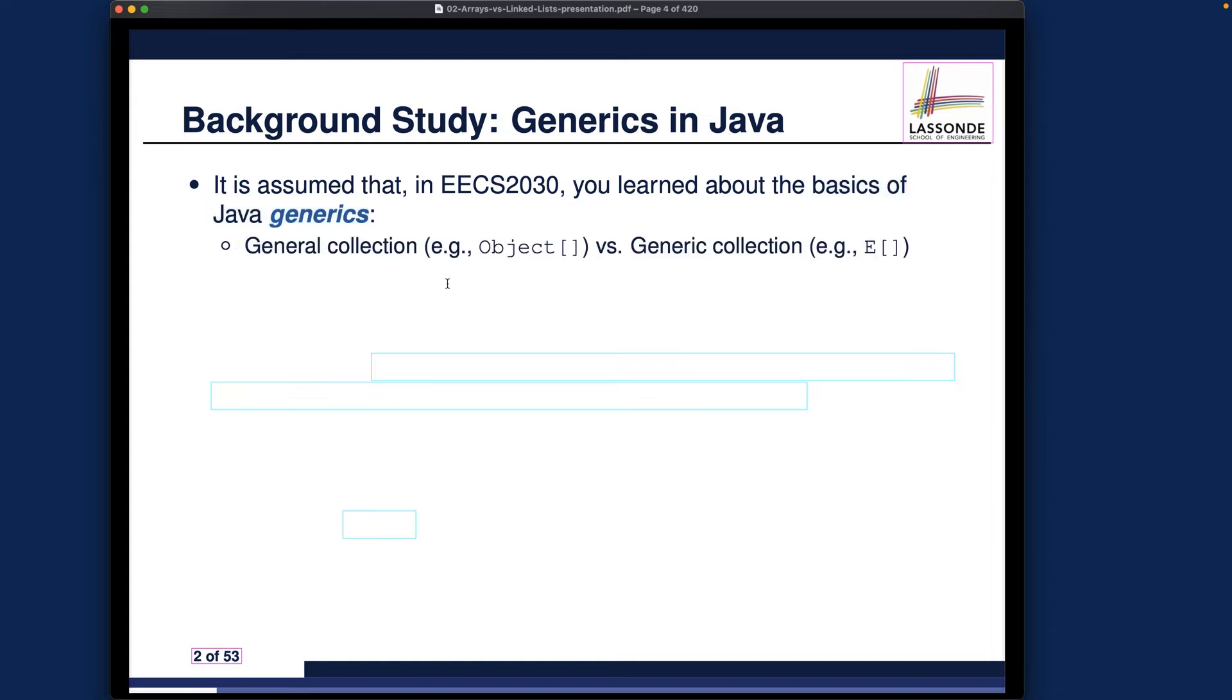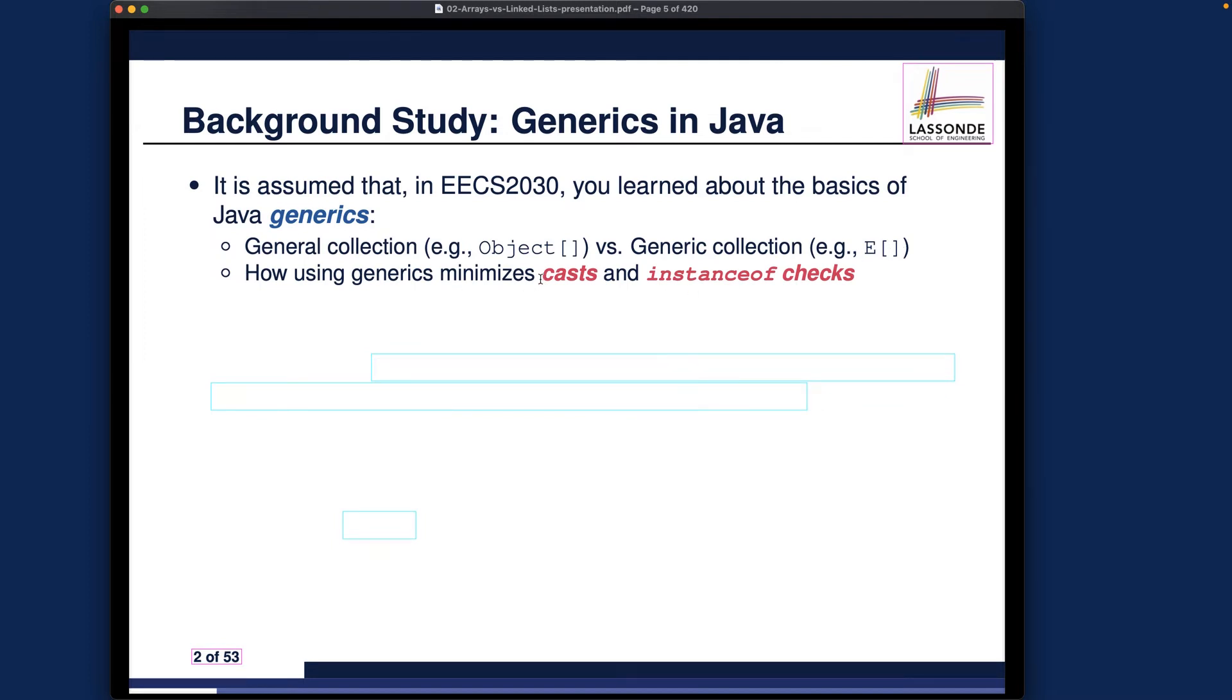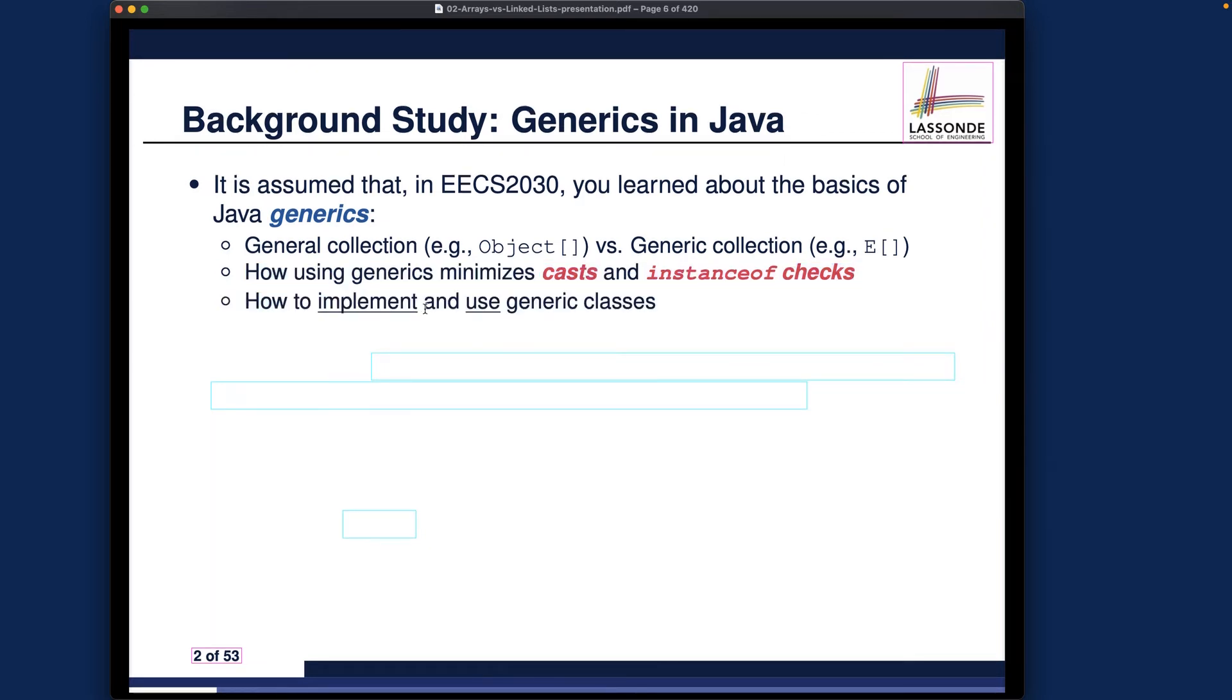It's required for this course; we definitely need generics for not just linked lists, but also we're going to need that for other data structures as well later. You should really know about the difference between a general collection, like an array of objects, versus a generic collection, like an array of type E, where E is a generic parameter declared at the class level. Using generics minimizes type casts and instanceof checks. That's a very important rationale of why we're using the design of generics rather than just an array of objects. Also, how you can implement and use generic classes. If you got any doubts about either of them, I would say you might need some thorough review before you can move on.